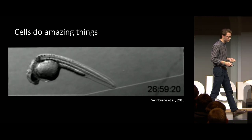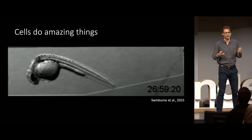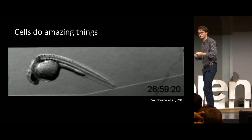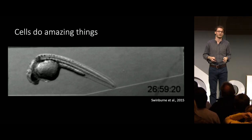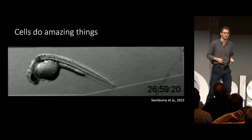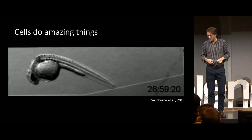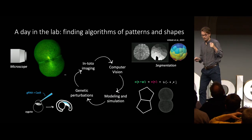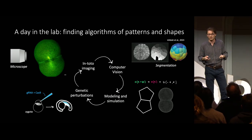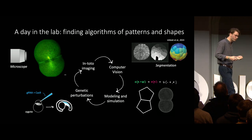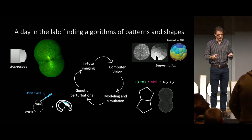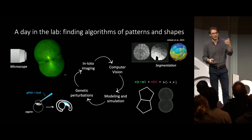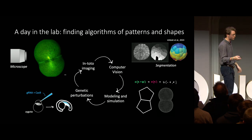It is mind-blowing how, in such a short amount of time, development happens. The precision and robustness of the cell is something we are fascinated by, and that I hope everyone will be after this talk. We believe that nature has developed a recipe book of strategies for precisely programming tissue patterns and shapes, and in order to decipher these recipes, our lab has pioneered a suite of approaches.